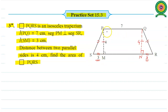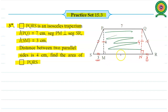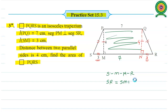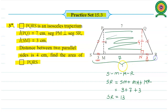Quadrilateral PMNQ is a rectangle, so pairs of opposite sides are equal and parallel. Once PQ value is 7, MN is also 7. Since S, M, N, R are collinear points, the value of SR equals SM plus MN plus NR. Adding: 3 plus 7 plus 3. So 7 plus 3 equals 10, and 10 plus 3 equals 13. So SR equals 13 units.